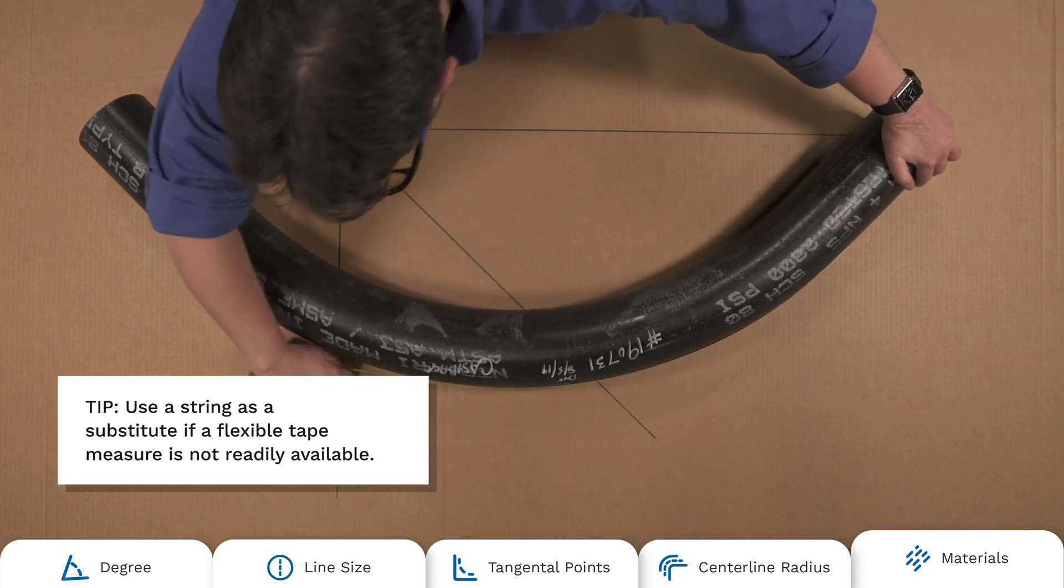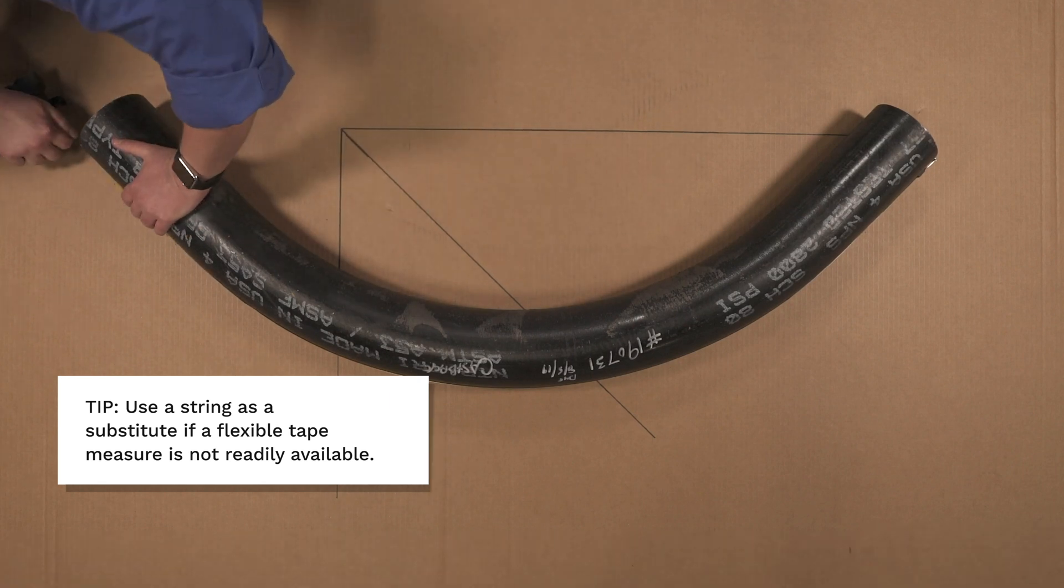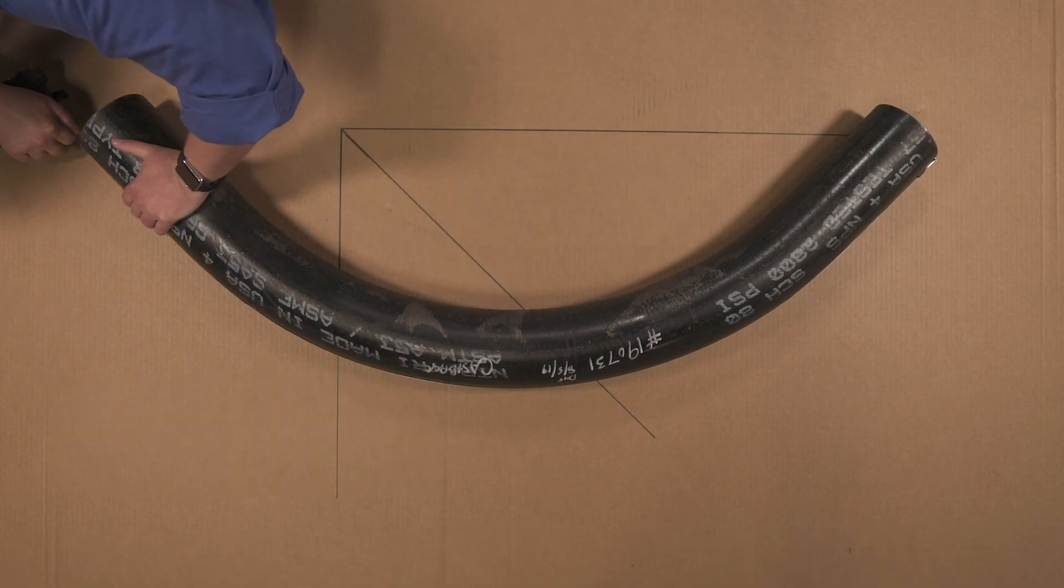If you can reach the elbow, you can get a measurement at the backside and that, coupled with the degree, will help us make an educated guess of the centerline radius.